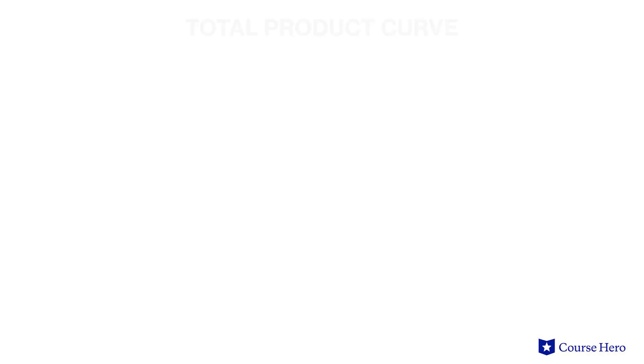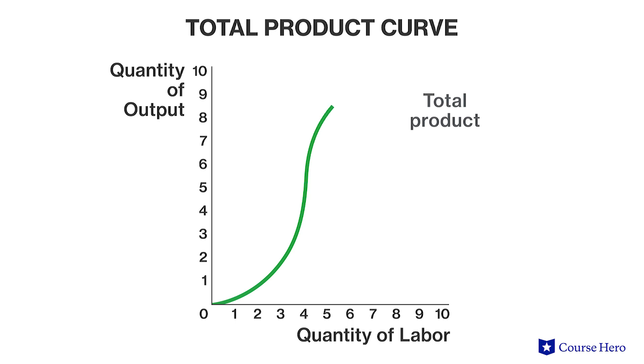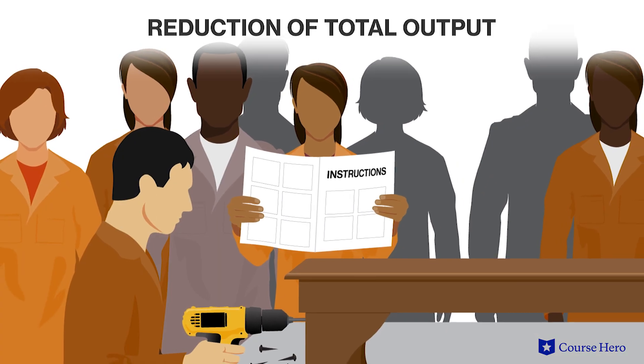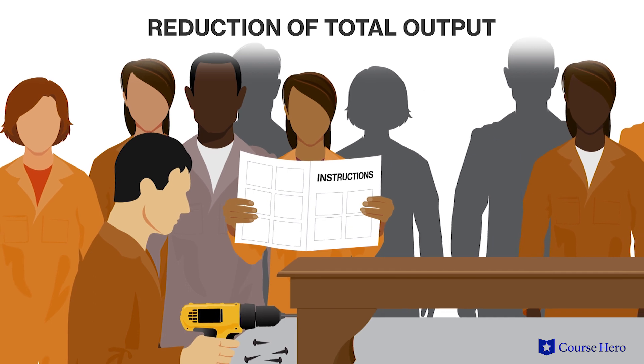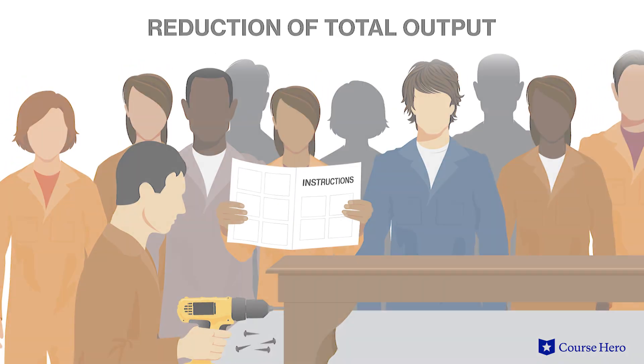As more workers are hired, the scope for further division of labor and specialization decreases, so the slope of the curve begins to flatten. At a later stage, the number of workers has become large enough that they may be difficult to manage, may get into each other's way, and cannot all be usefully employed at the same time, so the extra output each produces gets smaller and the curve eventually peaks. At this point, additional hires actually reduce total output. A total product curve is usually S-shaped.